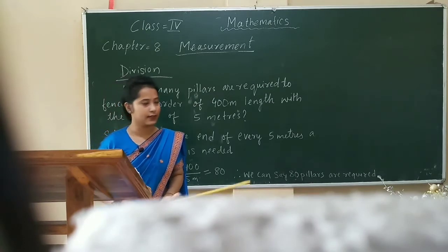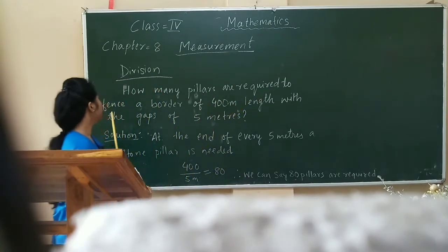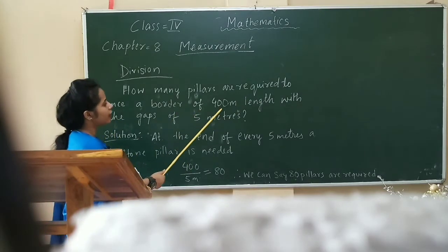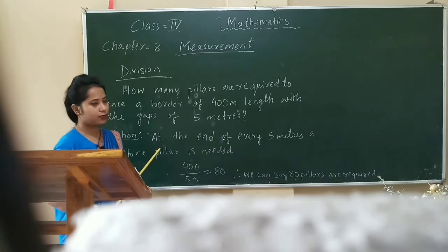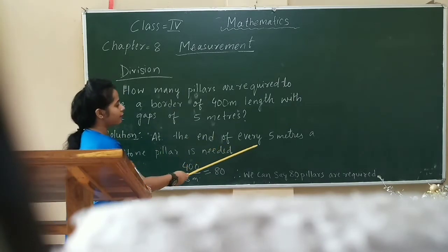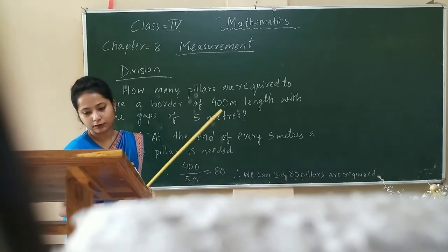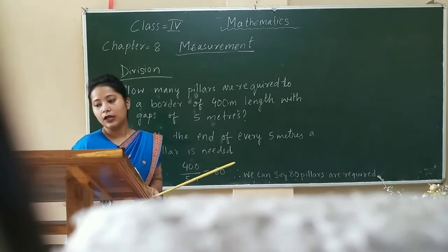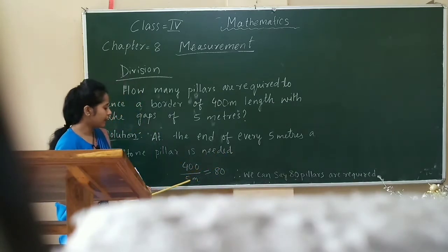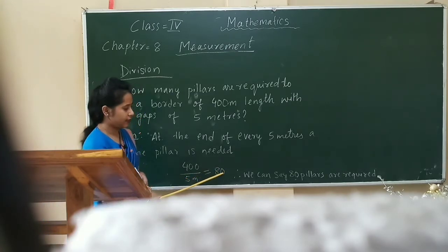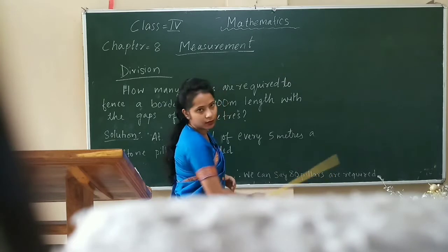Now we will see division. For example, how many pillars are required to fence a border of 400 meters in length with gaps of 5 meters? Here is the solution: at the end of every 5 meters, a stone pillar is needed. So, 400 divided by 5 equals 80. Therefore, we can say 80 pillars are required.